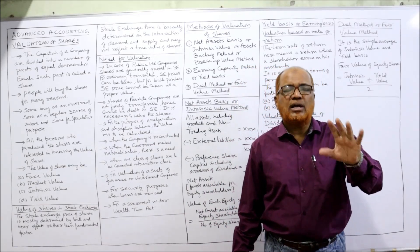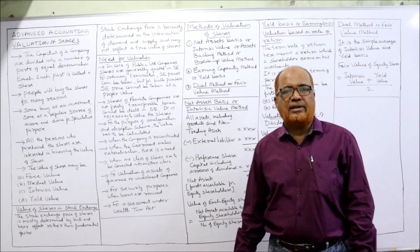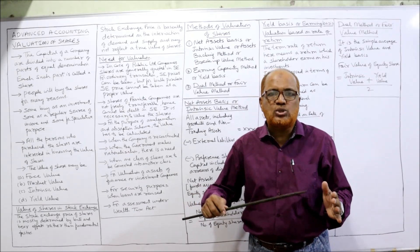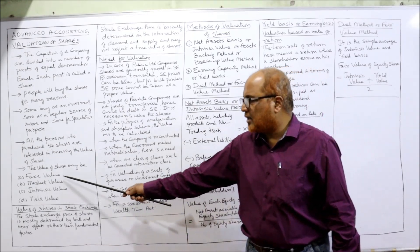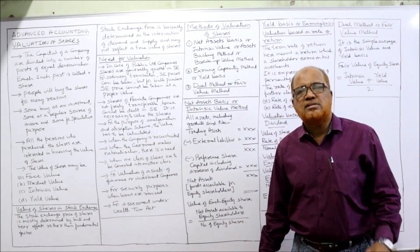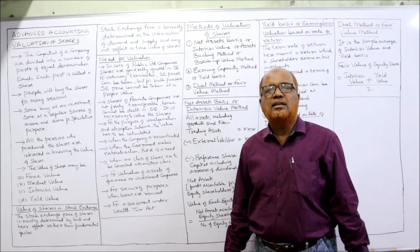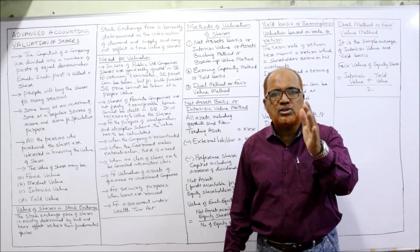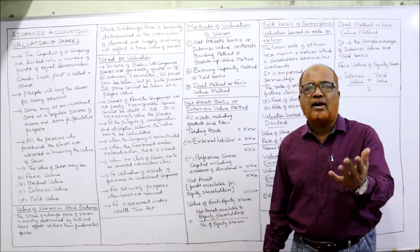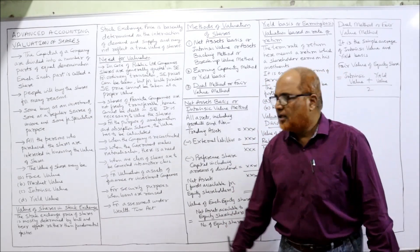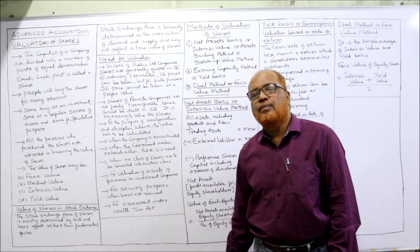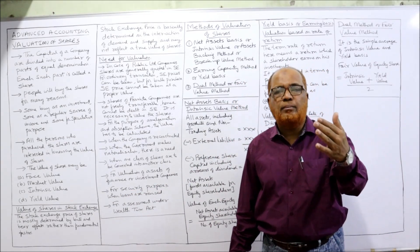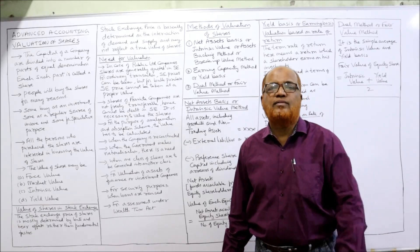Market value is the price at which shares are bought and sold in the market. Intrinsic value is determined by taking the assets and liabilities from the balance sheet to find out what the share is worth. Yield value means the value of a share according to the profitability or return of the company. On different bases we have different values of shares.